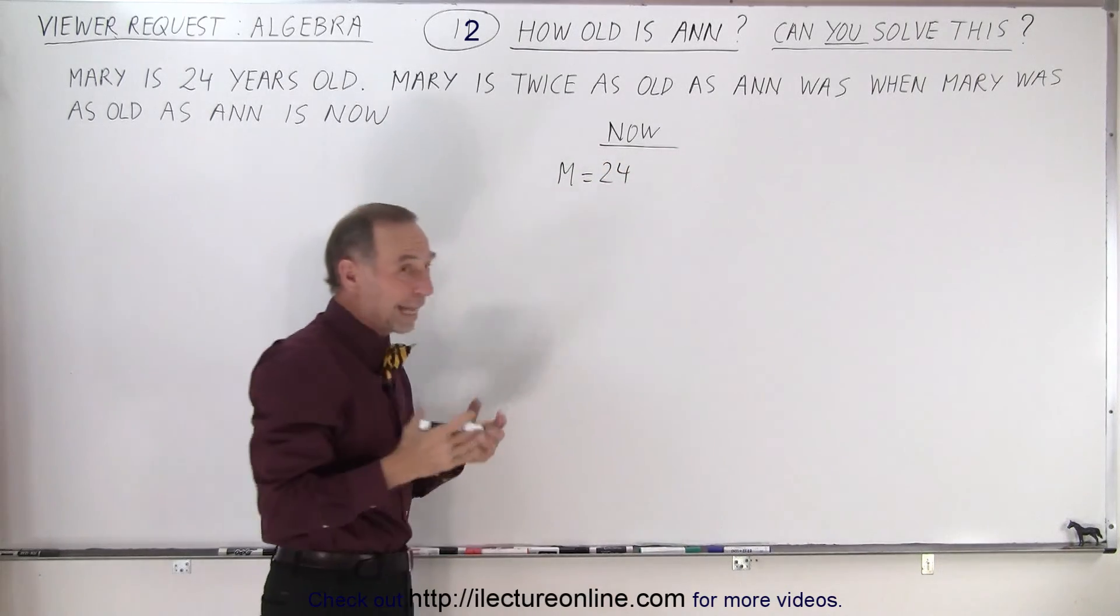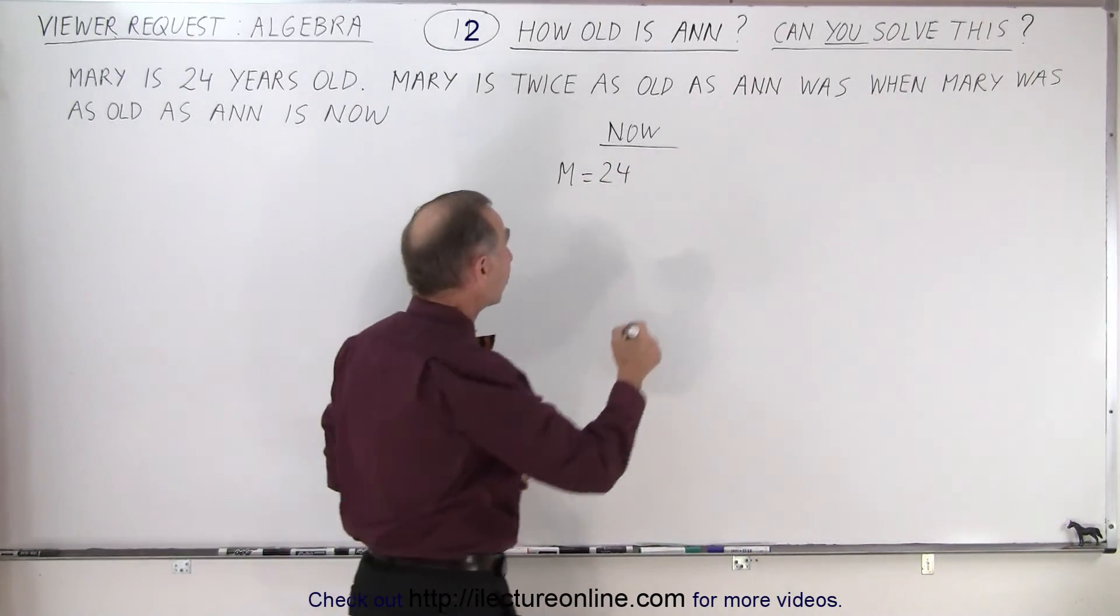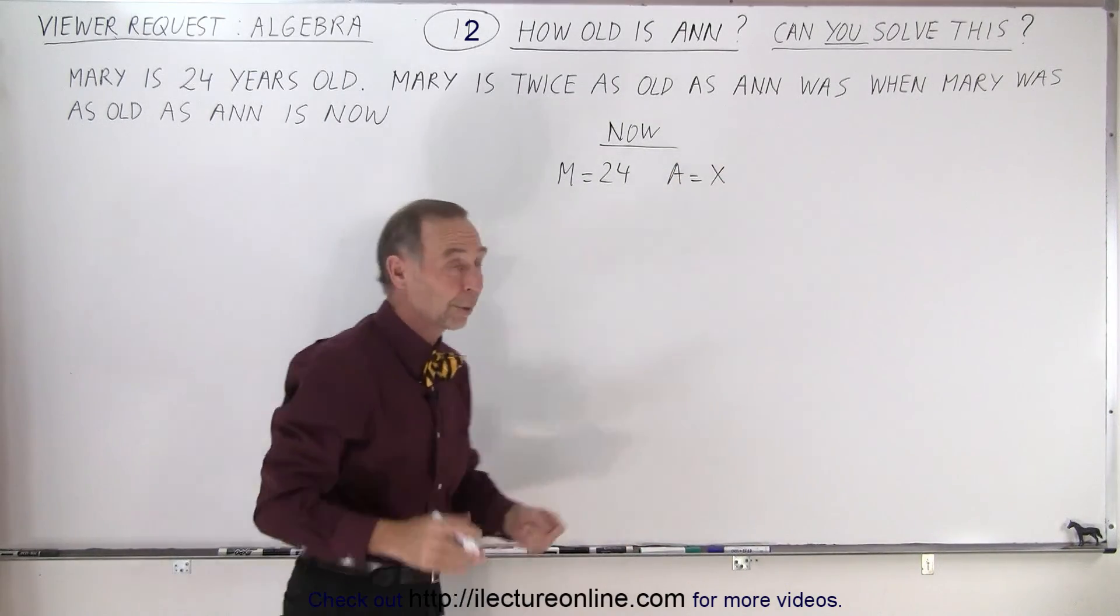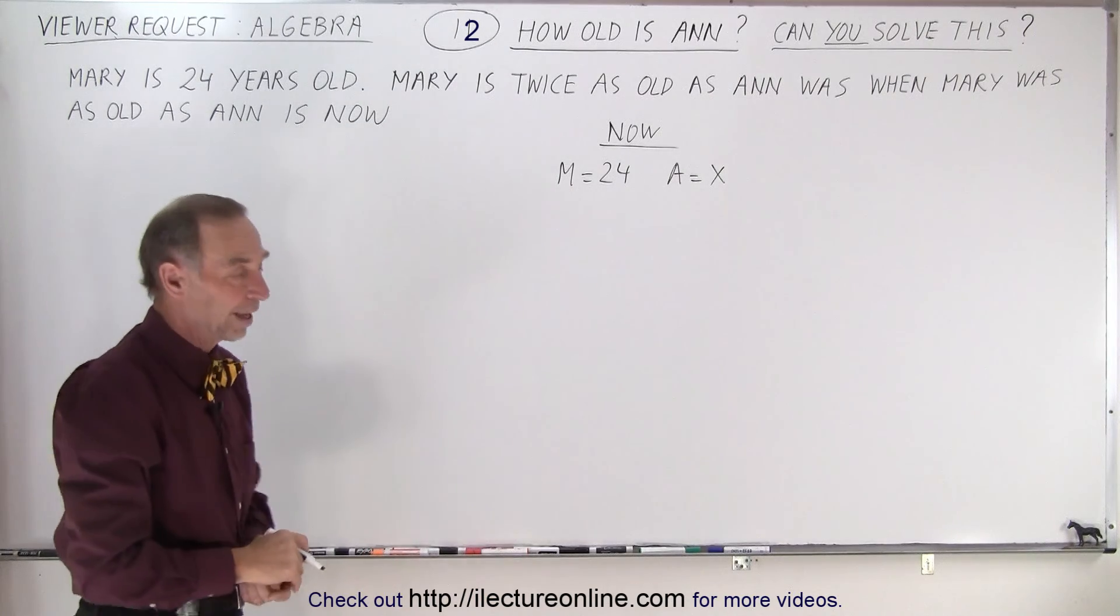And Anne, well we don't know what Anne's age is today so we'll just call it X. So Anne equals X. So she's X years old today. We don't know what that is and that's what we're looking for. How old is Anne?